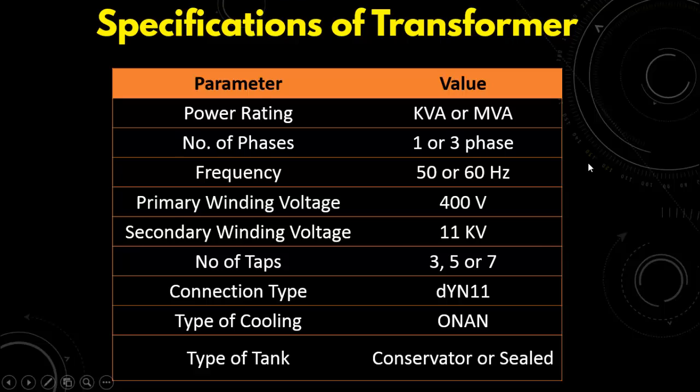So what if you have to specify a transformer? So these are the main parameters which are used to specify a transformer. First is the power rating of the transformer which can be in KVA or the MVA for the large power transformers. Then number of phases. It can be one phase, single phase, or three phase. Then frequency. Then the primary winding voltage and the secondary winding voltage. Also the number of taps.